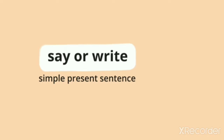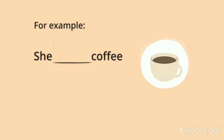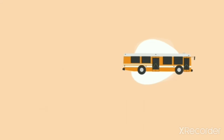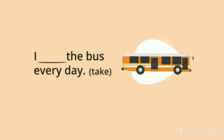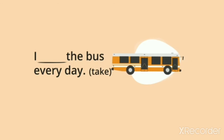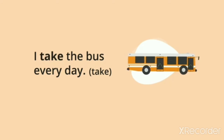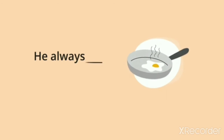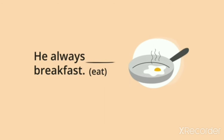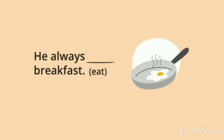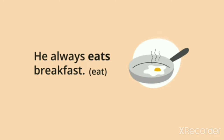Let's practice now. Say or write simple present tenses. For example: She dash coffee every day — She drinks coffee every day. Now you can try: I dash the bus every day — I take the bus every day. That is the correct answer. Good children. He always dash breakfast — after 'he', verb with S should come — He always eats breakfast. Very good.